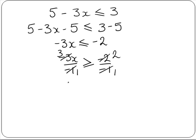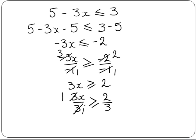So we are left with 3x is greater than or equal to 2. Now we divide both sides by 3 to get the x by itself. So 3x divided by 3 and 2 divided by 3. So 3 into 3 goes once. So we are left with x is greater than or equal to 2 thirds.